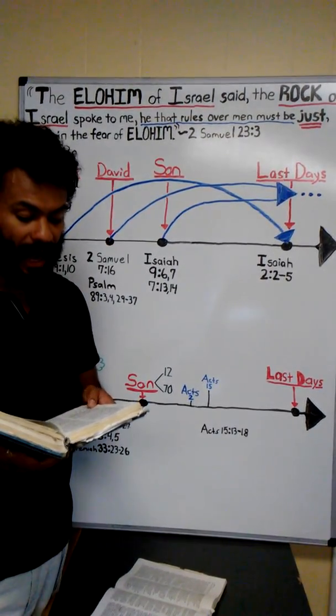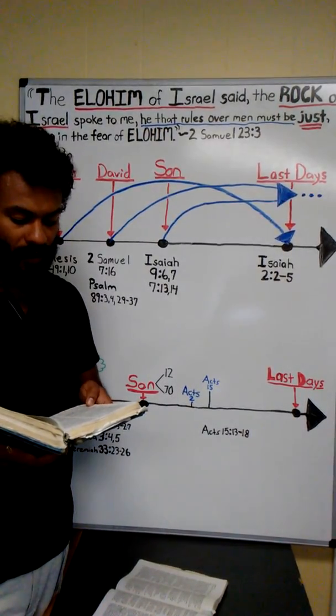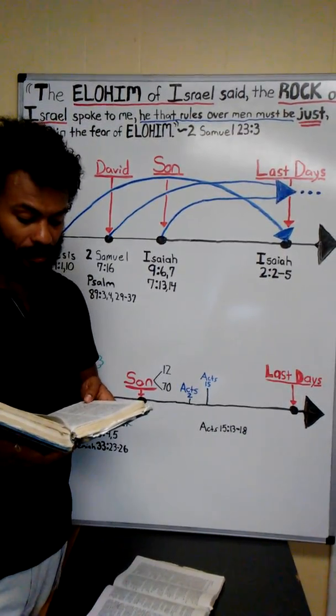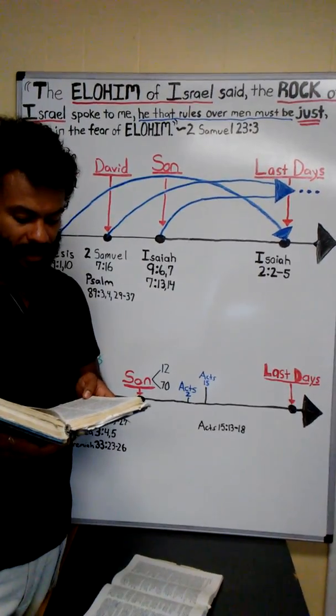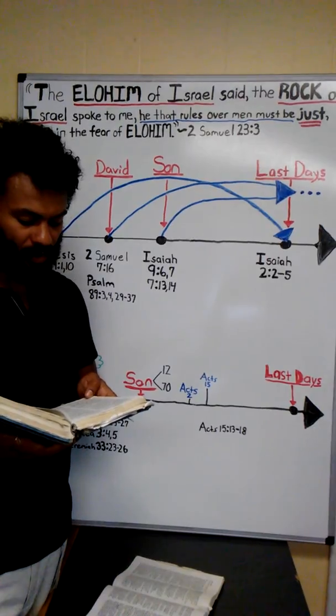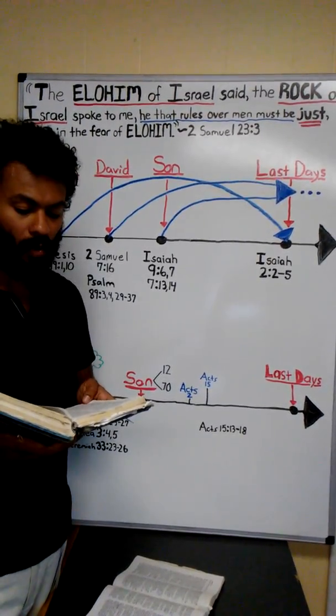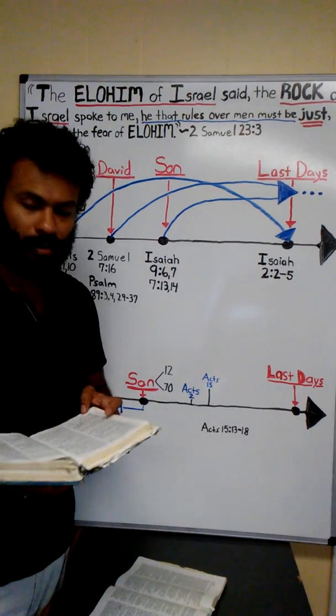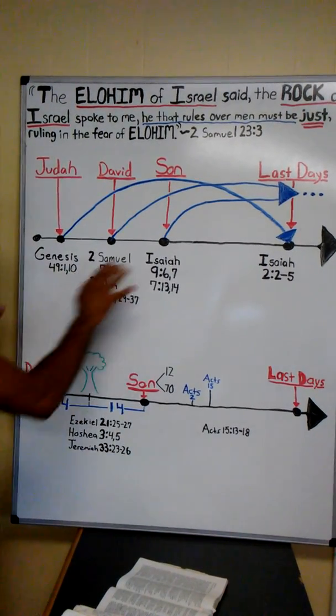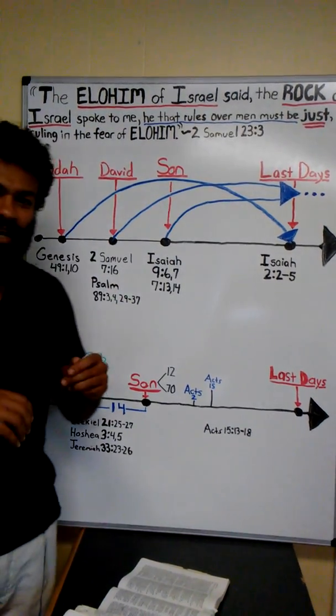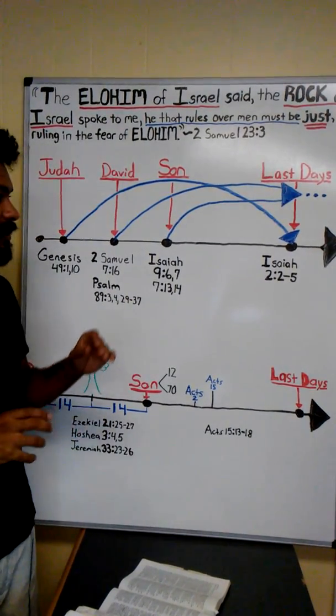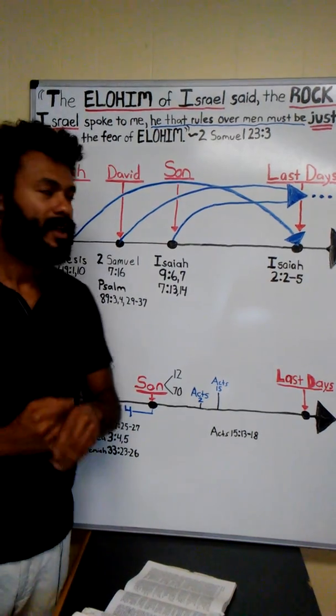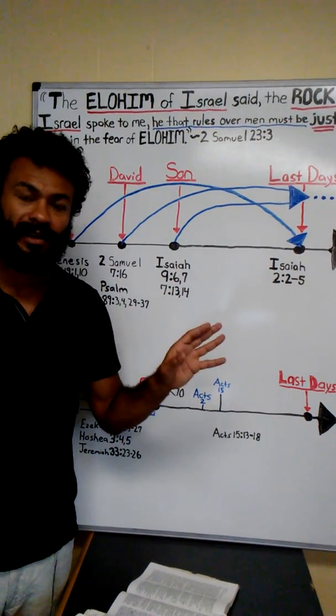For out of Zion comes forth the Torah and the word of Yahuwah from Yerusalem. And he shall judge between the nations and shall reprove many peoples. And they shall beat their swords into plowshares and their spears into pruning hooks. Nation shall not lift up sword against nation, neither teach battle any more. O house of Yaakov, come and let us walk in the light of Yahuwah.